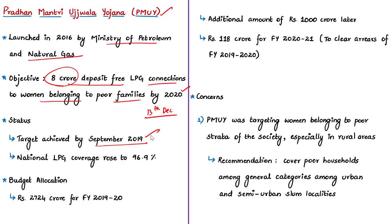The report also said that implementation of the scheme has resulted in an increase of national LPG coverage to approximately 96.9% — nearly 97%. Regarding budget allocation, the central government allocated around 2,724 crore for financial year 2019-20. The Ministry of Finance also made an additional allocation of 1,000 crore against a demand of 2,118 crore, so the remaining 1,118 crore was allocated in the recently presented Union Budget. This indicates a significant cut in budget allocation for this scheme.